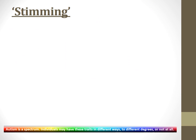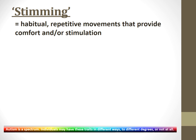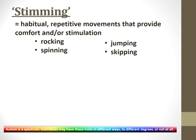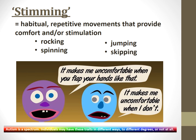Many autistic people have a technique for reducing anxiety known as stimming — short for self-stimulating behaviour. It's habitual repetitive movements that provide comfort and/or stimulation, such as rocking, spinning, jumping, skipping, or flapping your hands. If a non-autistic person says 'it makes me uncomfortable when you flap your hands like that', it would be better if they could remember that for the autistic person, they feel uncomfortable when they don't.